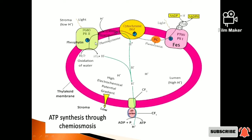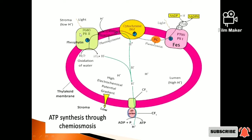Looking at the Photosystem II complex: it is attached to an oxygen-evolving complex. The Photosystem II reaction center is P680. There are many components, including Pheophytin, which is a colorless chlorophyll, and it is located in PS2.